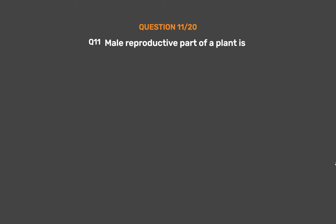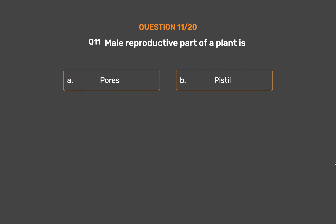Question No. 11. The male reproductive part of a plant is: Option A – Paws. Option B – Pistil. Option C – Stamen. Option D – Fusion.